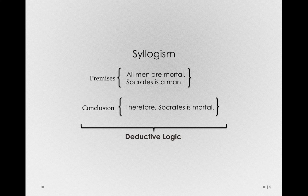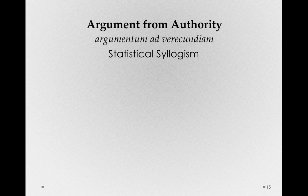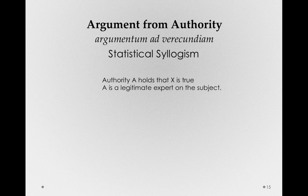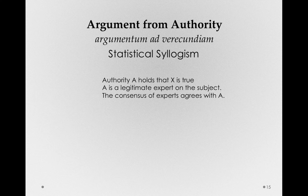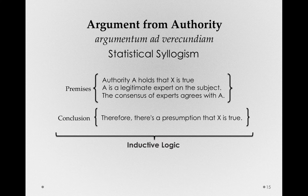Syllogisms come in different forms. We can talk about a statistical syllogism — this is actually argument from authority, argumentum ad verecundiam — where we say authority A holds that X is true, whatever X is. We know that A is a legitimate expert on the subject, and the consensus of experts agrees with A. Thus, there is a presumption that X is true. Notice this still has the form of premises and a conclusion, but this isn't deductive logic — this is a more inductive logic syllogism.